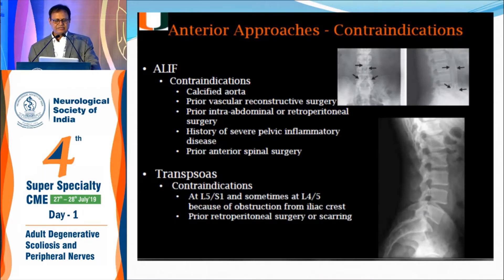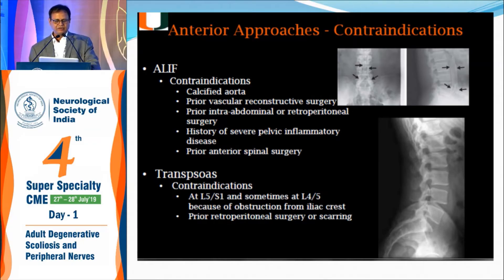Anterior lumbar fusion is also difficult. As was shown, if the aorta is calcified — which occurs in elderly people — it is a contraindication to do an anterior approach. Other contraindications include prior vascular reconstructive surgery, prior anterior abdominal surgery where the planes are lost, severe pelvic inflammatory disease, or any prior spinal surgery anteriorly, which makes redo surgery difficult.